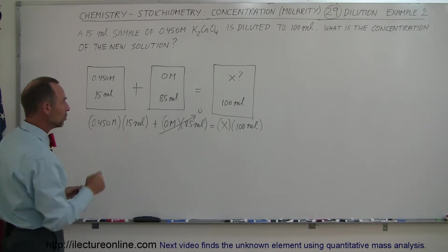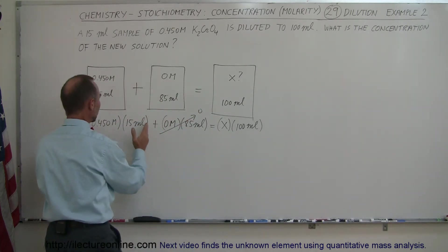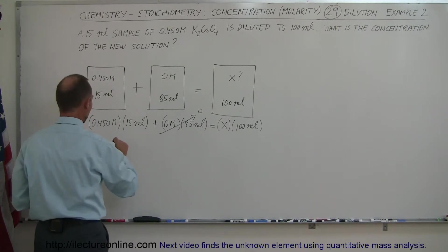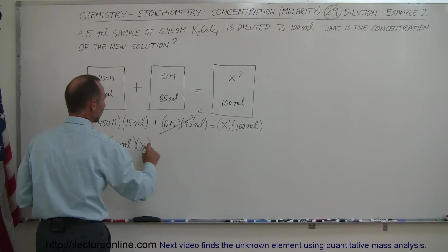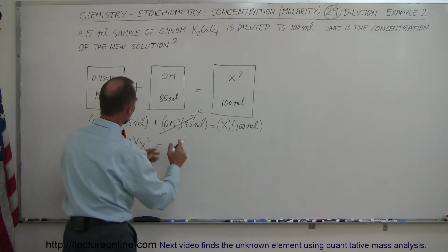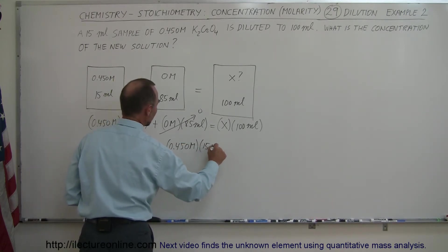So what we can do now is we can rewrite the equation. I'm going to write this portion on the left. I'm going to write this portion on the right. So I'm going to turn the equation around. So I have 100 milliliters times x, which was the right side equation, which I put on the left. And I take the left side equation, put it on the right, which is 0.450 molar times 15 milliliters.